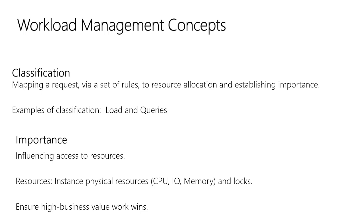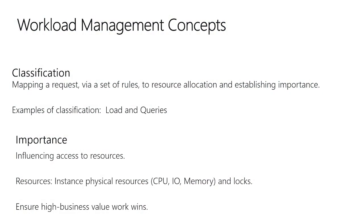Importance is all about influencing access to resources — CPU, IO, and memory, but also locks. Locks become very important when you have conflicting readers and writers going after the same data — trying to maintain fresh data while also having tight SLAs on the reporting side. What you want with importance is for the high business value work to win out overall, by establishing what is truly highly important to your workload and associating the necessary importance.